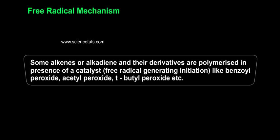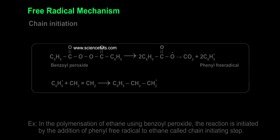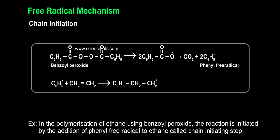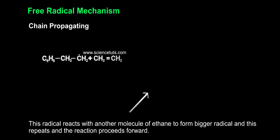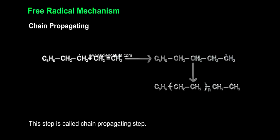Some alkenes or alkadienes and their derivatives are polymerized in the presence of a free radical generating initiator such as benzoyl peroxide, acetyl peroxide, tertiary butyl peroxide, etc. For example, in the polymerization of ethene using benzoyl peroxide, the reaction is initiated by the addition of a phenyl free radical to ethene — called the chain initiating step. This radical reacts with another molecule of ethene to form bigger radicals, and this repeats as the reaction proceeds forward. This step is called the chain propagating step.